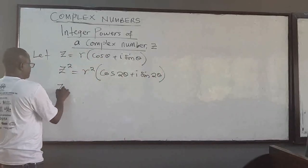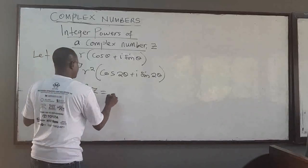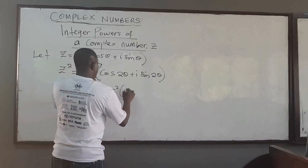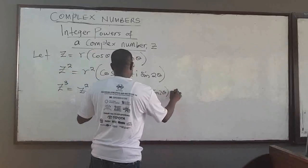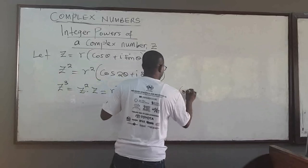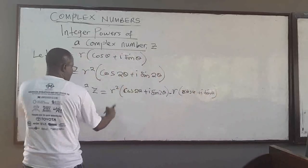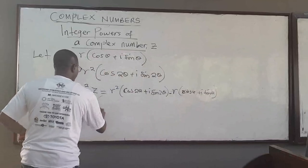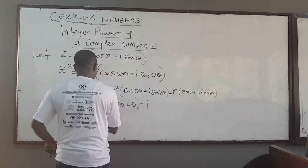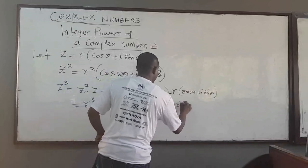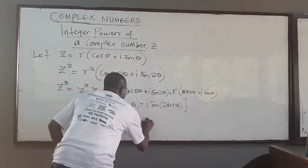If I do the same thing for z³, I write it as z² times z. We know z² = r²(cos 2θ + i sin 2θ), multiplied by z = r(cos θ + i sin θ). Then r² times r becomes r³, and I have cos(2θ + θ) + i sin(2θ + θ), which is r³(cos 3θ + i sin 3θ).